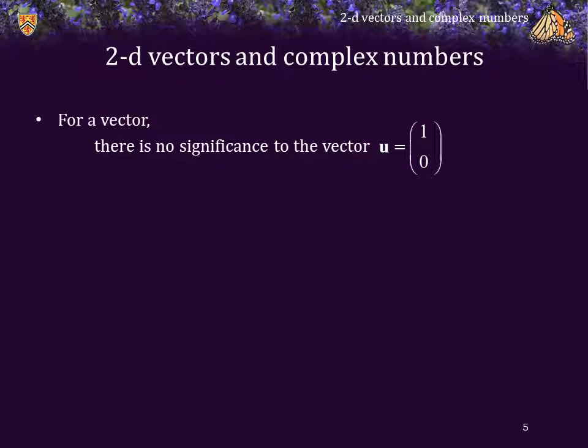For a vector, there is no real significance to the vector (1, 0). Yes, it's a unit vector, but beyond that, it's not significantly different from (0, 1).